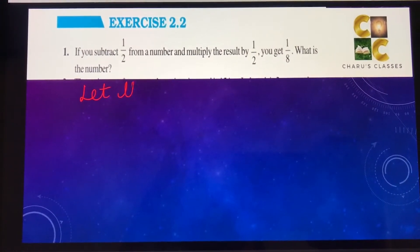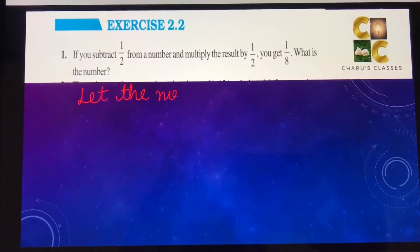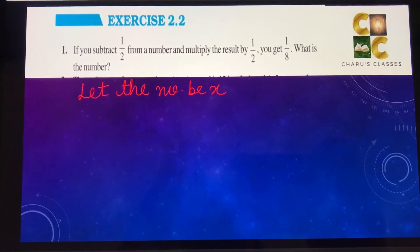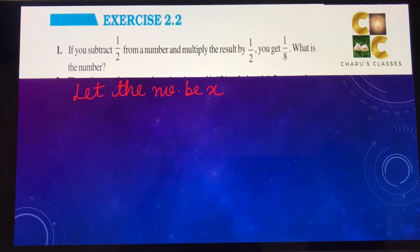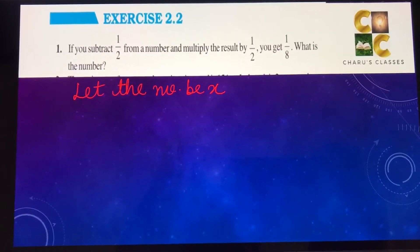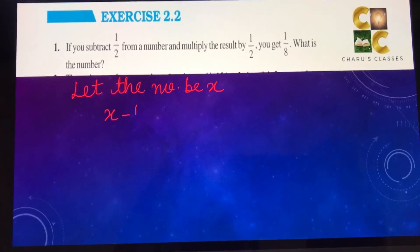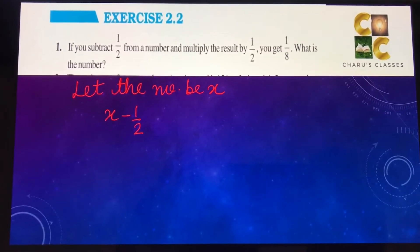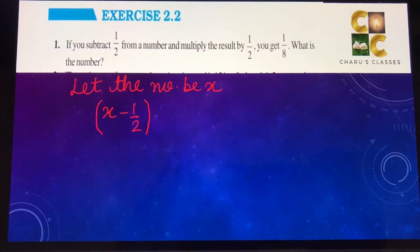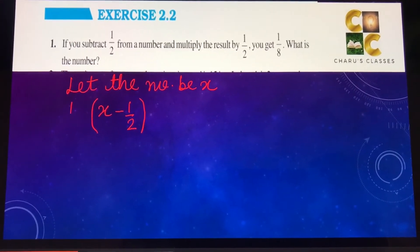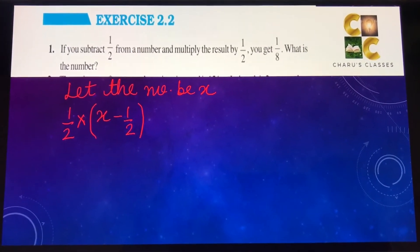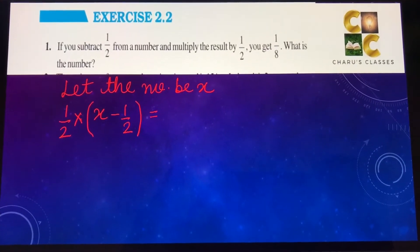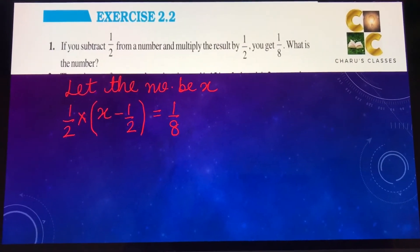So let the number be x. You subtract half from a number. That means you're going to minus half from x and multiply the result by half. Since we are multiplying the result by half, we should multiply by half. You get 1 by 8. This is the equation.